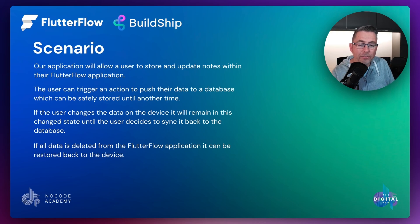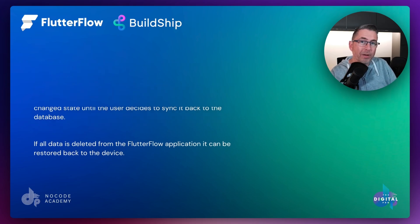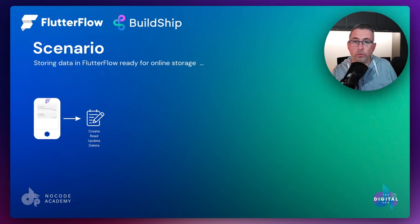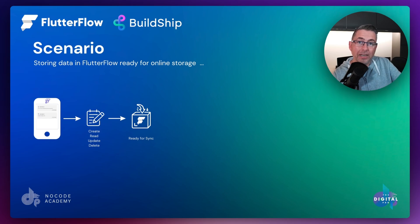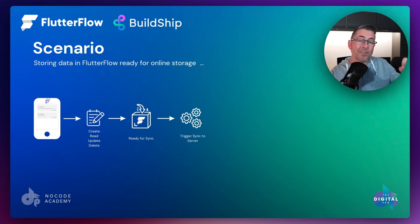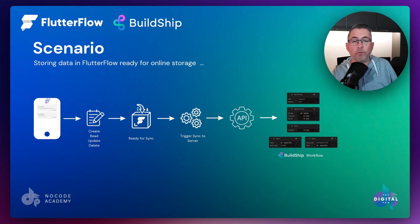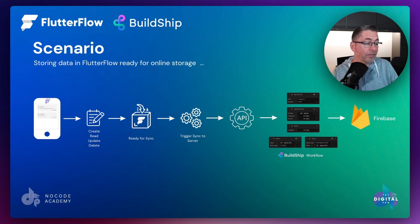Let me show you the scenario on screen so it's clear exactly what this application is going to do. Here's our FlutterFlow application — you can see a couple of notes on the screen. The user can create, read, and update these notes persisted on their local device with no external database. All notes are stored inside application state using custom data types. When ready, the user goes into settings, fires a button, makes an API call that invokes a Buildship workflow, which then stores the data inside a Firebase Firestore database.